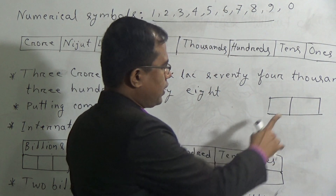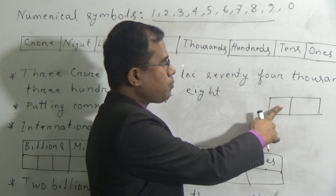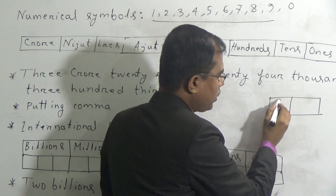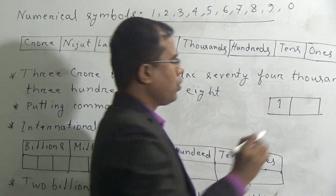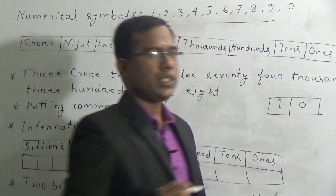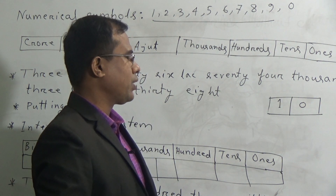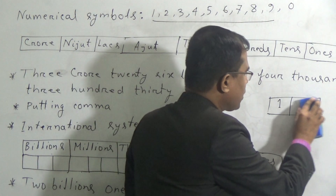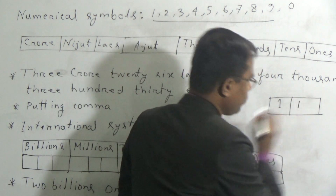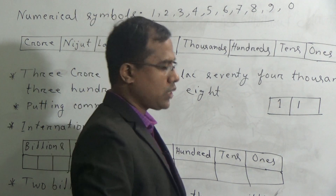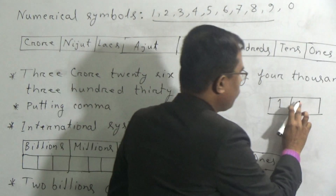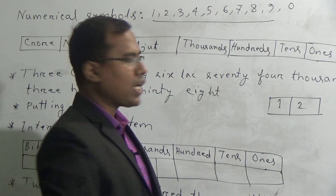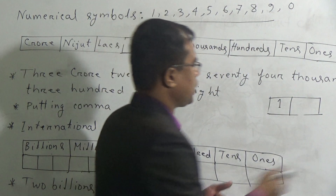Here 2 places exist. This place is called the 1s place and this place is called the 10s place. For expressing 10, we have to put the lowest significant digit — that is 1 — in the 10s place, and we have to put 0 in the 1s place. If we want to express 11, the number 1 more than 10, we have to put 1 in the 1s place instead of 0. For expressing 12, we put 2 in the 1s place. Similarly, for expressing 19, we put 9 in the 1s place.